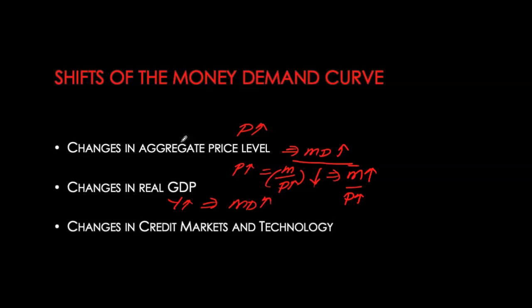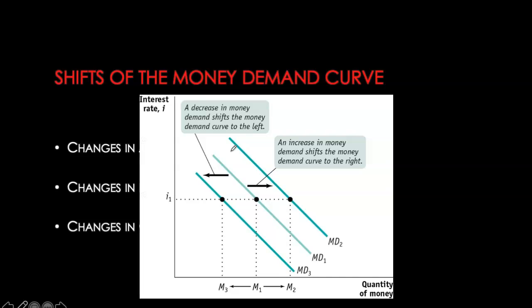Third, we have changes in credit markets and technology. In financial systems where credit is easily available, people don't need to spend their own money — they can make purchases with credit cards or bank loans. The more efficient the credit markets, the less money balances people need to hold, so money demand decreases. Similarly, with banking technology like ATMs and electronic transfers, people don't need to hold as much cash. However, if the cost of this technology is prohibitively high, demand for money balances will actually increase.